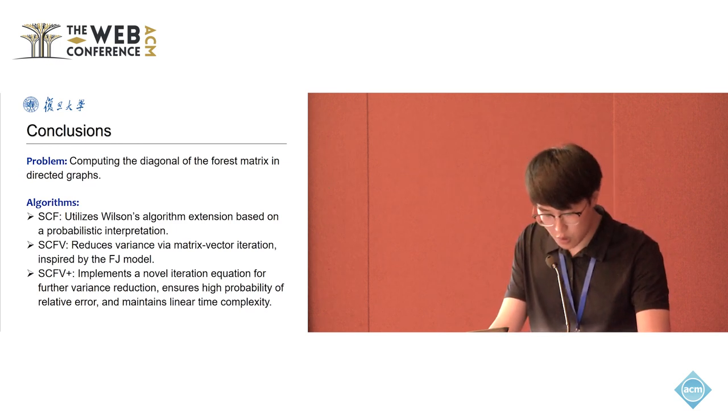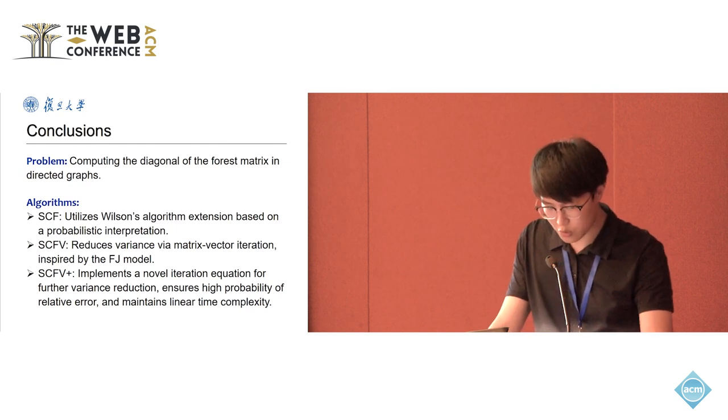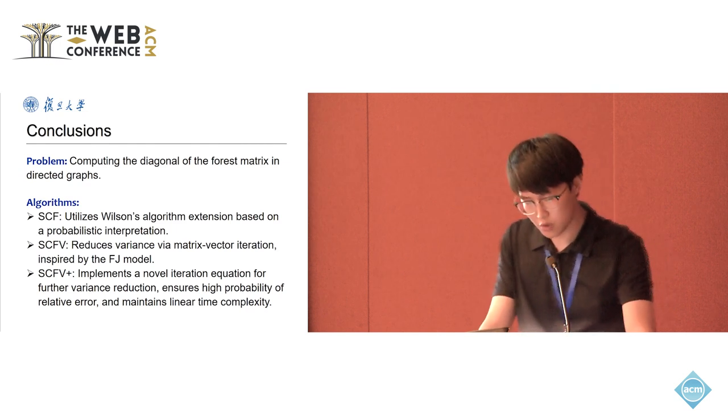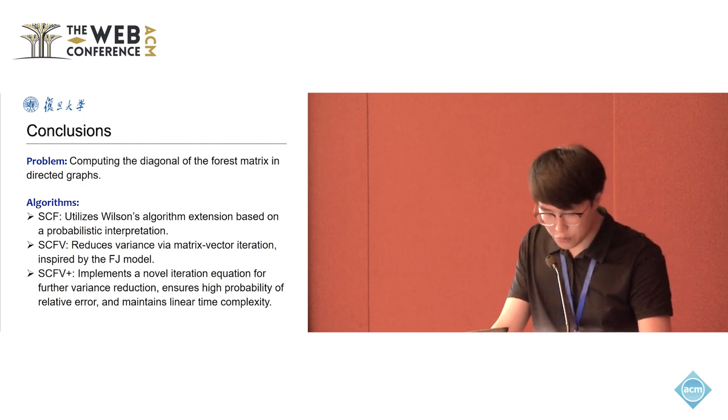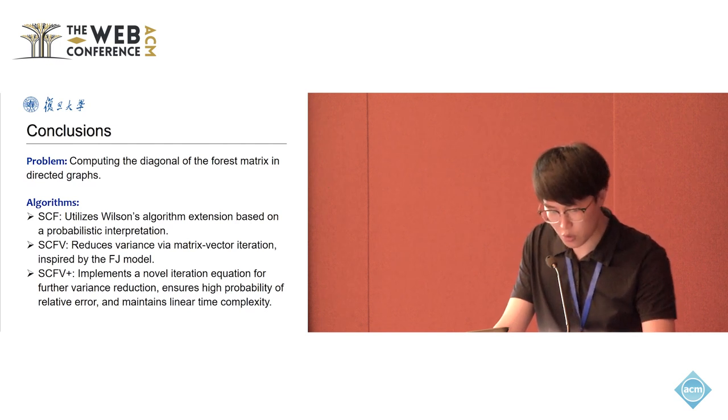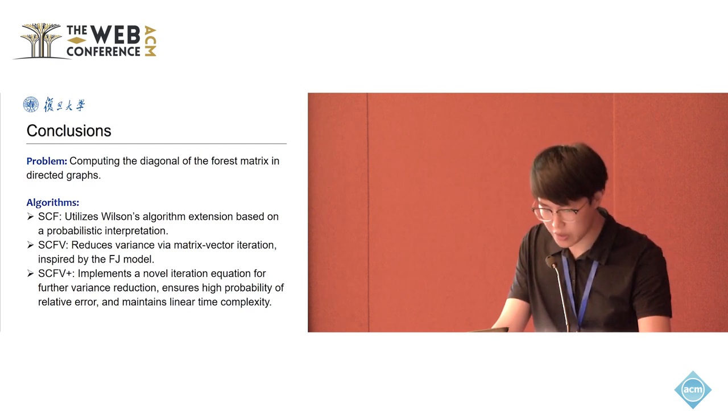SCFV, which reduces variance through matrix-vector iteration inspired by the FJ model. And SCFV+, which further reduces variance with a novel iteration formula, ensuring high accuracy and maintaining efficiency.